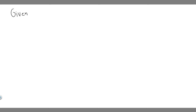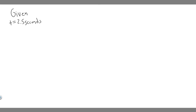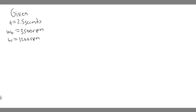Let's go ahead and write down what we're given first. We know the time it's going to take to slow down is 2.5 seconds, so t equals 2.5 seconds. This is our time interval from beginning to end. We know it's going to slow down from 3500 RPM to 1200 RPM — these are our initial and final angular velocities. So these are the values we need to solve this problem.